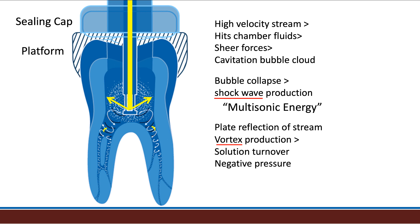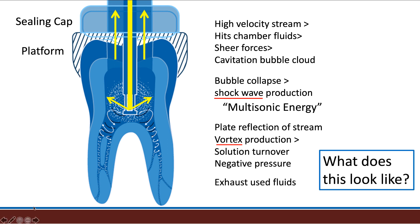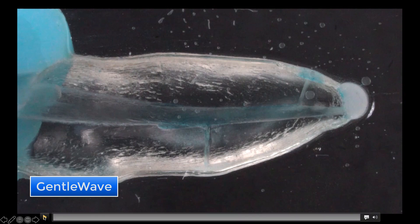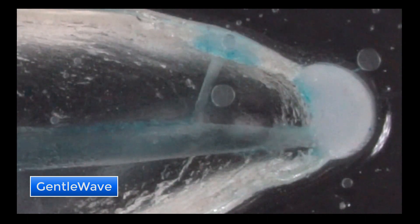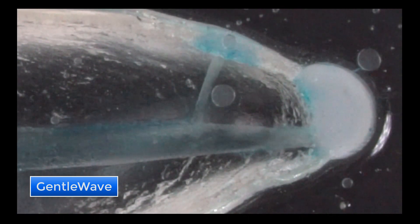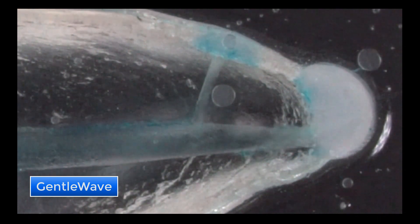It is the combination of two effects: activation of the solution by shock waves from the cavitation cloud that accelerates the chemistry, and the vortex flow turning over the solutions in the canal spaces and creating the negative apical pressures. These two effects drive the dramatic improvement in disinfection and debridement this technology provides. This video shows the effect in a plastic tooth model — you can see the solutions being activated and cleared throughout the pulp space. Zooming into the apex, you'll see the sonic energy deep into the apex and the lateral canal. It is this level of activation and solution turnover in very small anatomy that explains the high level of disinfection and debridement you see with the GentleWave procedure — a superior result unequaled by any other technology in endodontics.